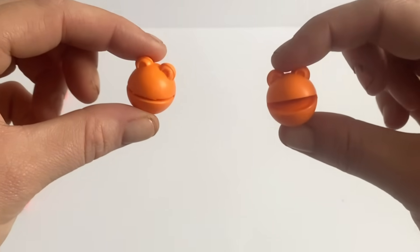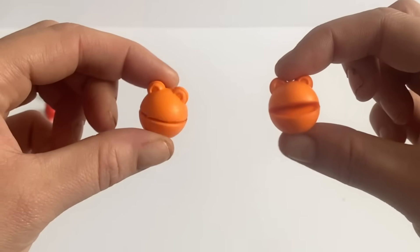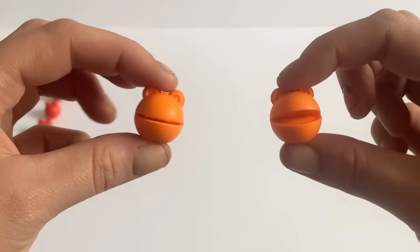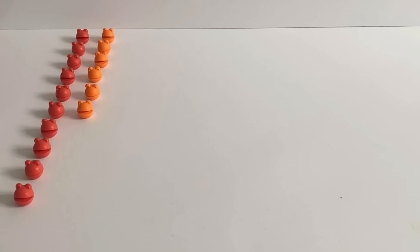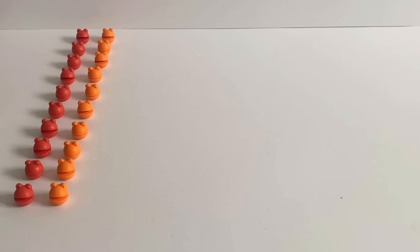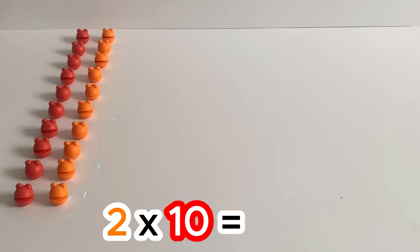Next we have the Orange Number Blobs that represent Number 2. 1, 2, 3, 4, 5, 6, 7, 8, 9 and 10. Ten Orange Number Blobs. 2 times 10 equals 20.